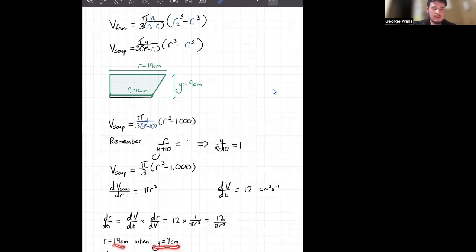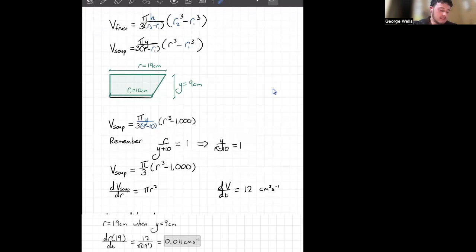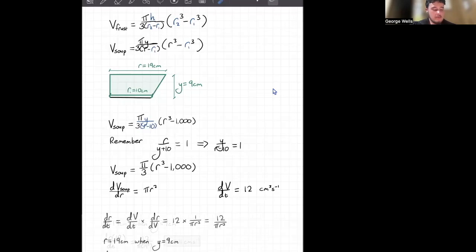we want this when the radius is equal to 19 centimeters, because that's when the depth of our soup is equal to 9 centimeters. So all we've got to do now is just plug in our radius being equal to 19 centimeters. So 12 over pi times 19 squared gives us a final answer of 0.011 centimeters per second. And with that, we are done. We have solved the soup question.